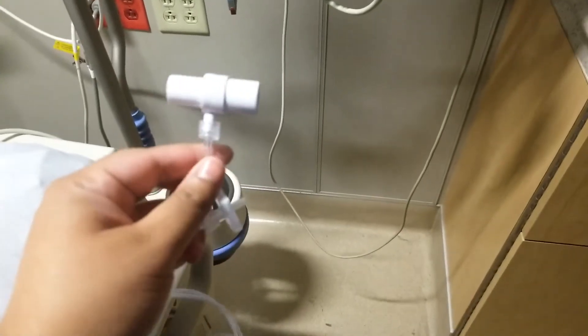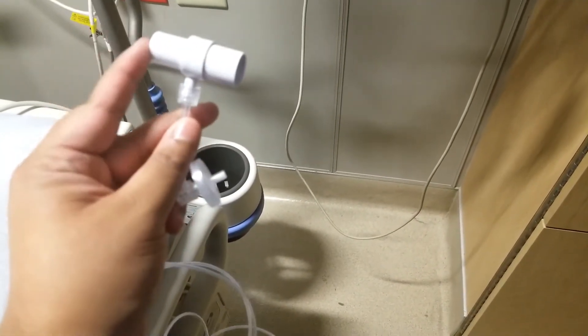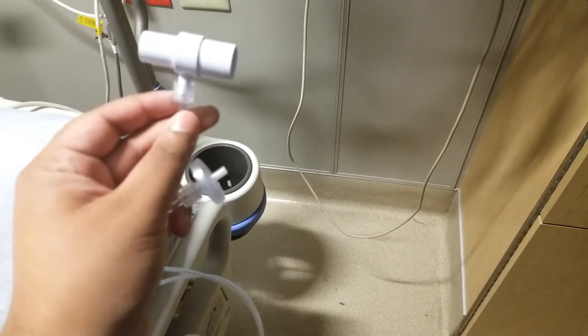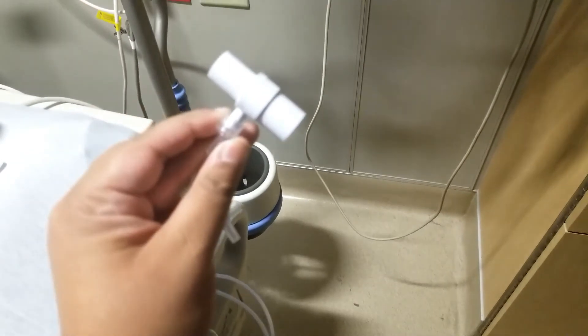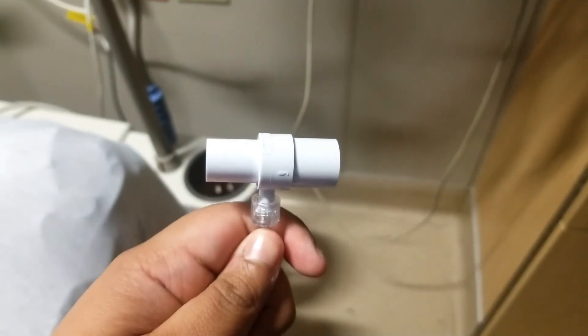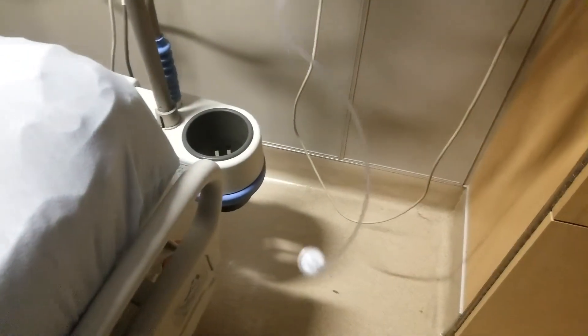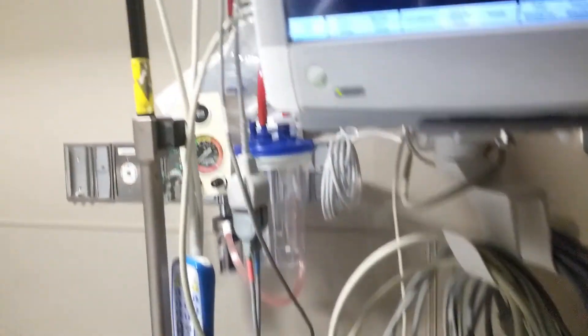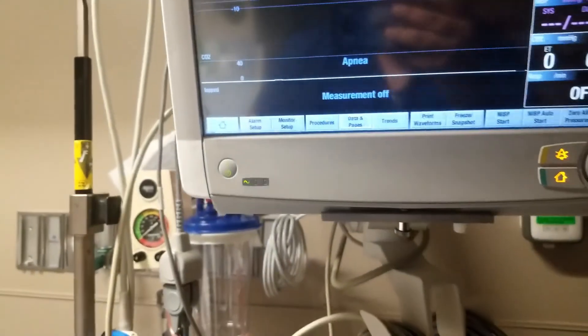Say your person is intubated. What they'll use is this device here. So one end is going to go into our ET tube, and then the other end will connect our ET tube to our ventilator tubing. So once we connect that there, then we can connect the end of the tubing to our monitor up here on the side where our water trap is, and we will get results.